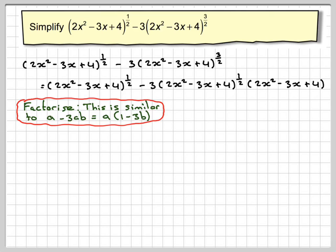Now the a here, or the thing which is in like terms, is this one here and this term here. Those are like terms. So it can come out: (2x² - 3x + 4)^(1/2).